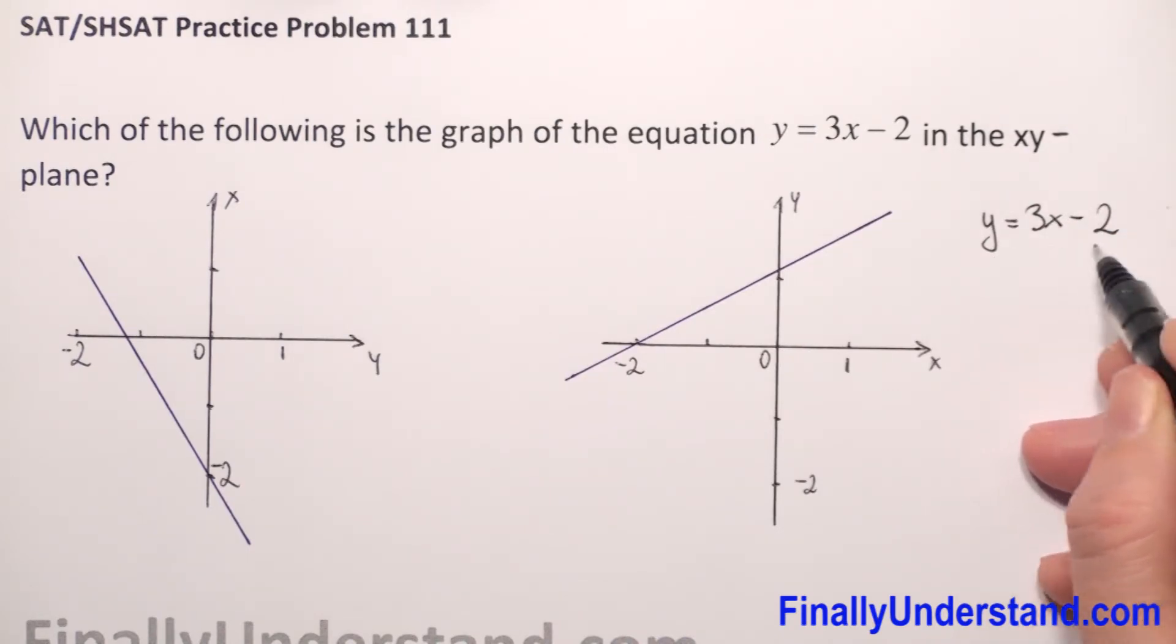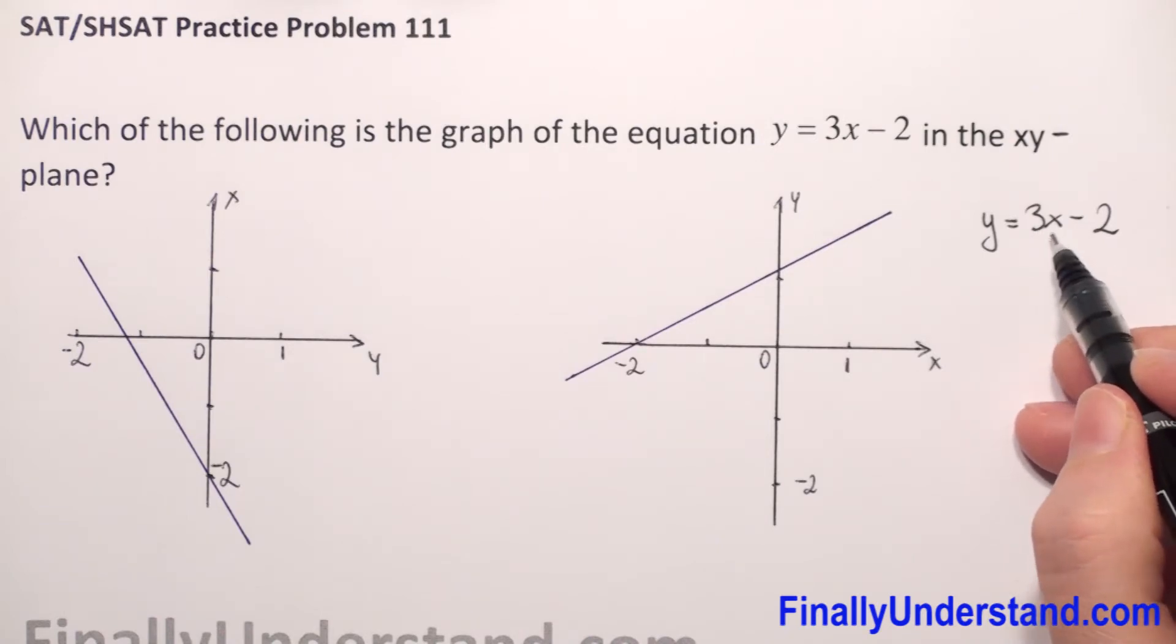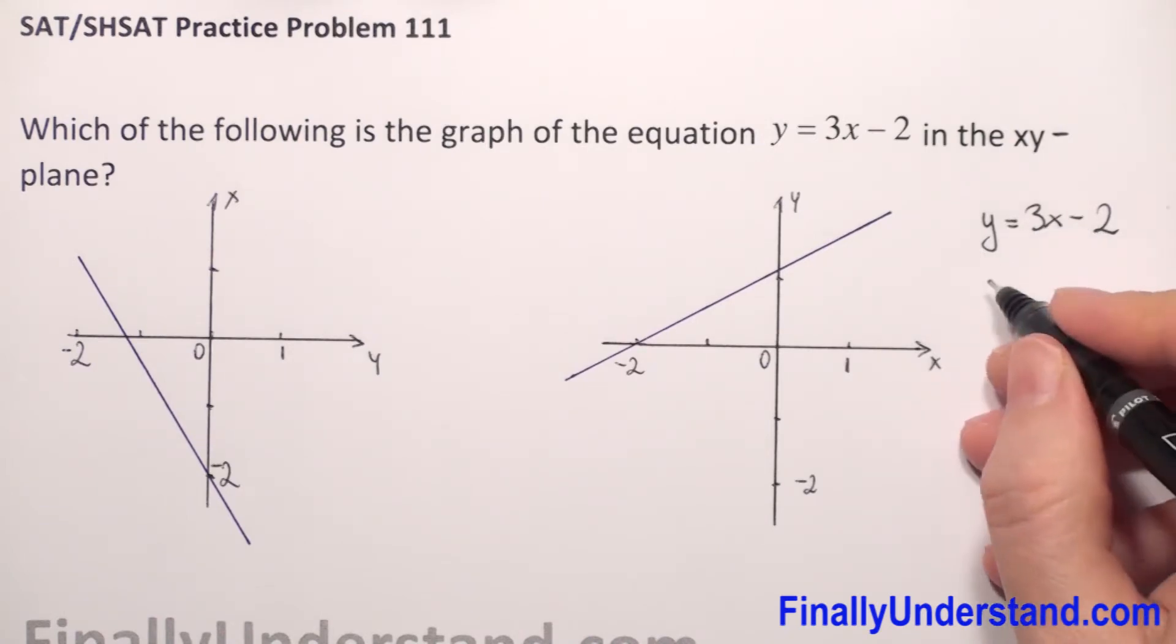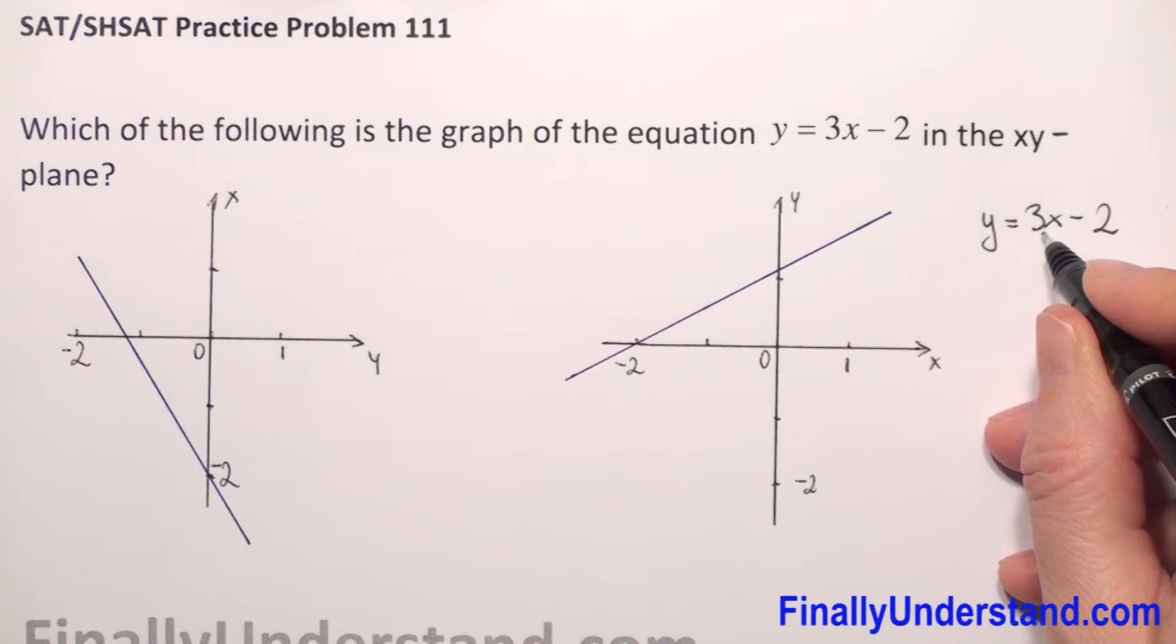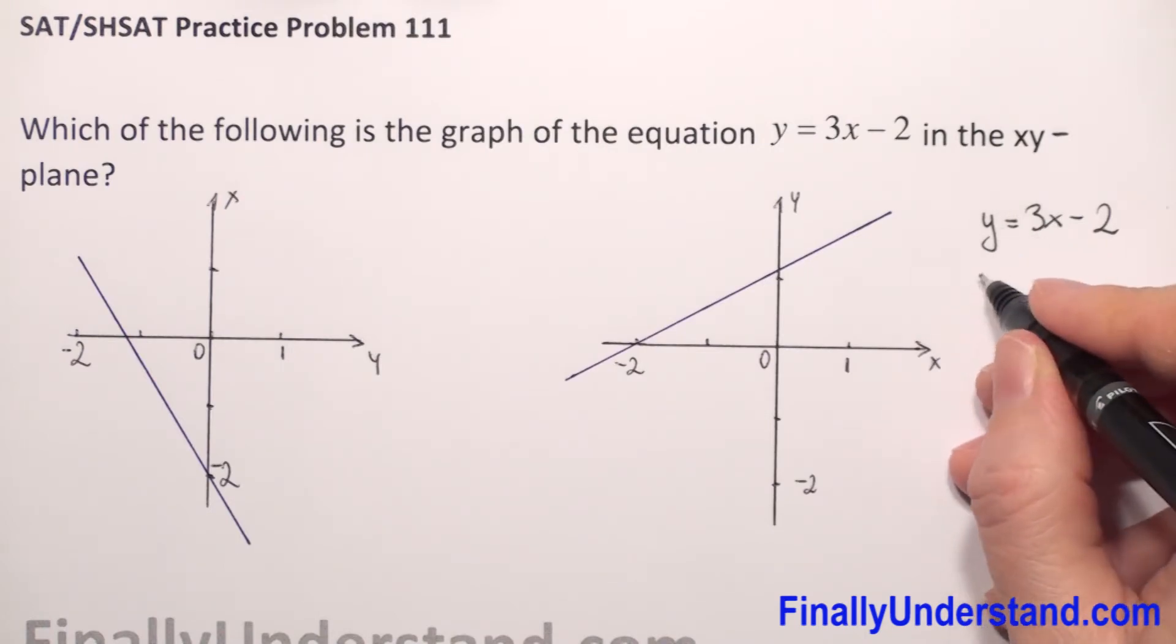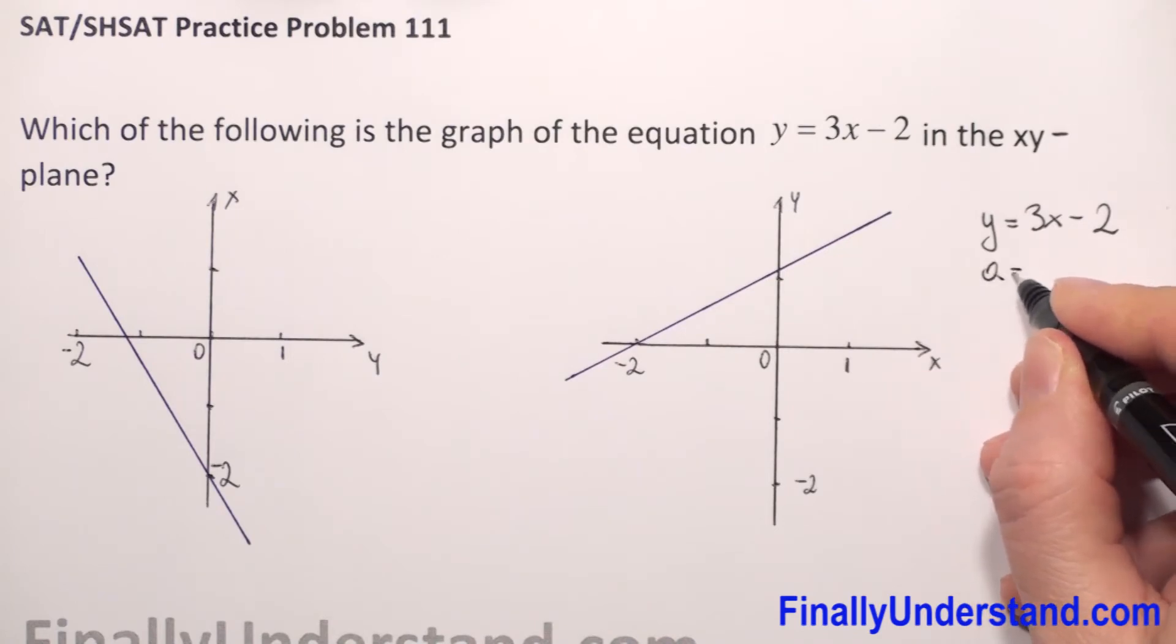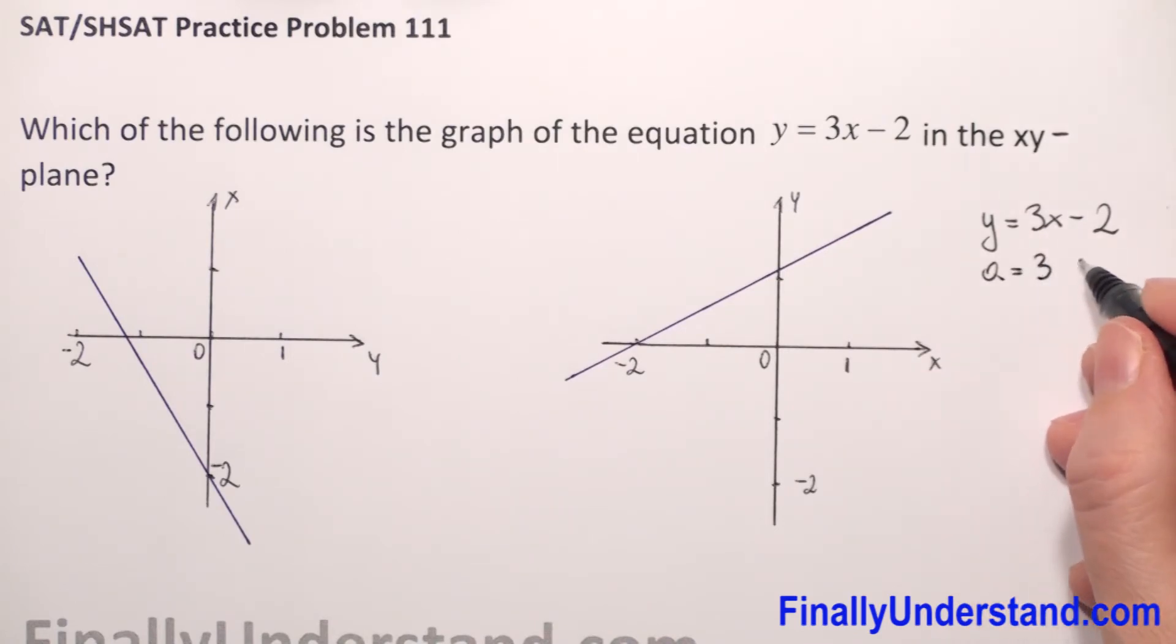What else can we say about this function? The coefficient before x is positive. So the slope, because the coefficient before x is our slope, our slope is equal to 3, is positive, greater than 0. So it means our function is going up.